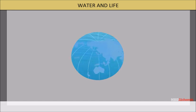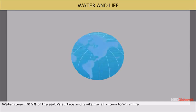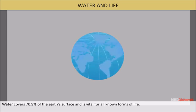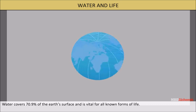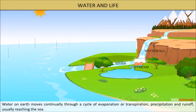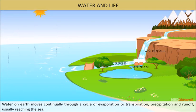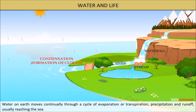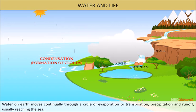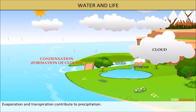Water and life: water covers 70.9 percent of the earth's surface and is vital for all known forms of life. Water on earth moves continually through a cycle of evaporation or transpiration, precipitation, and runoff, usually reaching the sea.